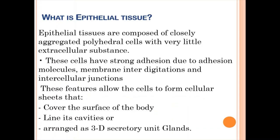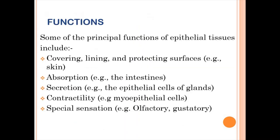Epithelial tissue is composed of closely aggregated polyhedral cells with very little extracellular matrix. These cells rest on a lining called the basement membrane. What you should know about epithelial tissue is that it has very little extracellular substance.